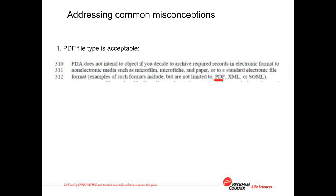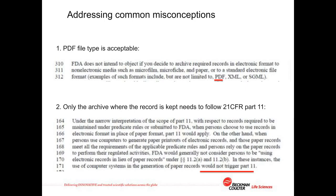For example, electronic records stored in some proprietary format in an archive that only works on a computer running Windows XP are unlikely to be accessible in 10 years' time, when it will be almost impossible to find a computer that can still run Windows XP. So to prevent such mistakes, the FDA recommends electronic file formats that are designed to be readable on many different platforms. One of those is, of course, PDF, which can be read on Windows, Apple, Android, etc. Electronic records stored in PDF format are far more likely to be readable in 10 years' time.